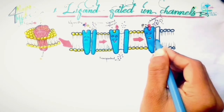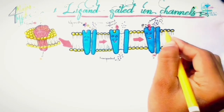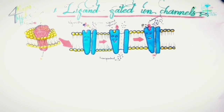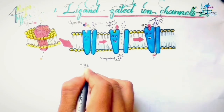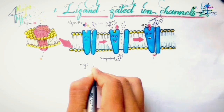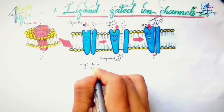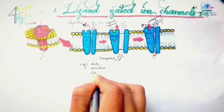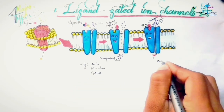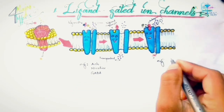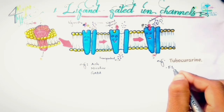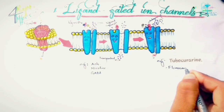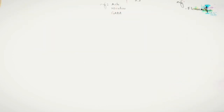Agonists may be displaced by antagonists, which render the ion channel inactive. Examples of agonists include acetylcholine and nicotine acting on nicotinic receptors, and GABA acting on GABA-A receptors. GABA-A receptors are also activated by allosteric modulators like benzodiazepines. Tubocurarine antagonizes acetylcholine and nicotine on nicotinic receptors, and flumazenil antagonizes benzodiazepines on GABA-A receptors.